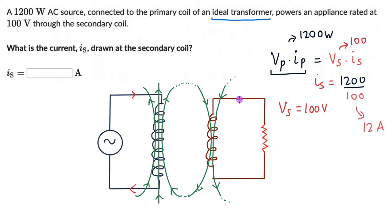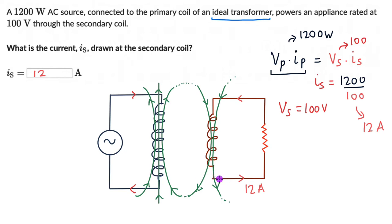So there is a current of 12 amperes flowing in the secondary circuit. We can put in 12 amperes and check our answer. You can try similar questions from the exercise in this lesson, and if you are watching on YouTube, I've added the link to the exercise in the description.